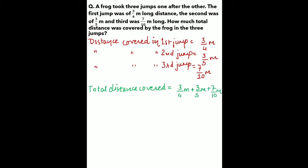When we take out the LCM of 4, 5, and 10, it will be equals to 20. So write 20 as the common denominator. In the first fraction, denominator is 4, so it will be multiplied by 5. The second fraction's denominator is 5, so multiply it by 4. In the third fraction, denominator is 10, so multiply it by 2.